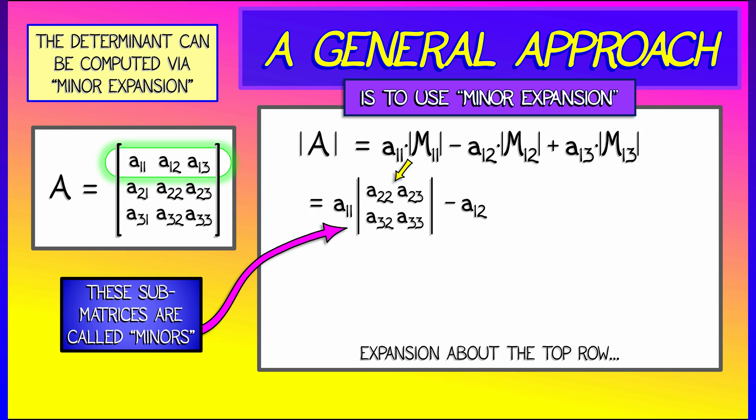Then what I have to do is subtract A12, the second entry in the first row, times the minor obtained by deleting the first row and the second column. And I take the determinant of that 2x2 minor. Then I add A13 times the determinant of the 1-3 minor, that is, delete the first row and the third column.